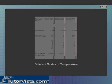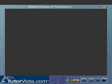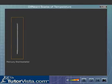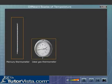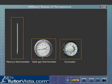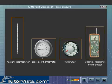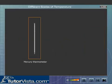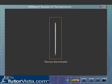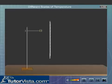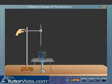There are various types of thermometers like mercury thermometer, ideal gas thermometer, pyrometer, and electrical resistance thermometer. The most commonly used thermometer is the mercury thermometer, in which expansion of mercury takes place when it is brought in contact with a hot body due to transfer of heat.